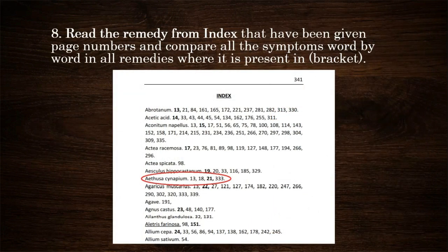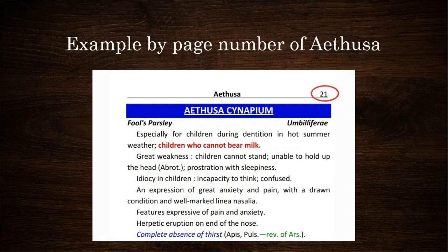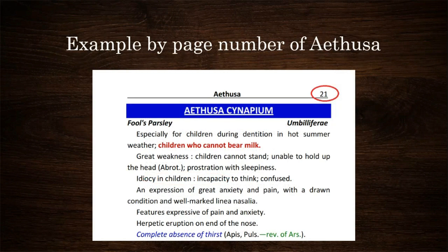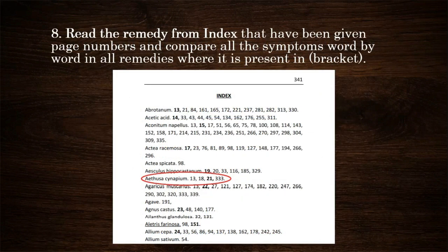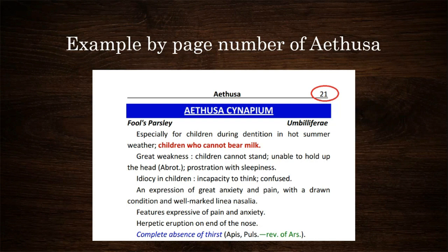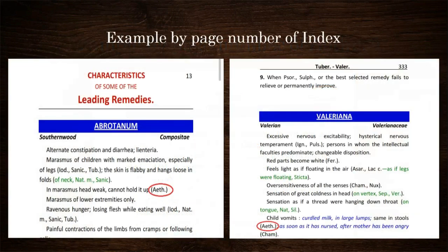Eight, read the remedy from the index that has been given page numbers, and compare all the symptoms word by word in all remedies where it is present in brackets. For example, Aethusa Cynapium with page numbers 13, 18, 21, 3, 33 in the index — the page number of Aethusa is 21, but all symptoms where it is present in brackets are also present in Aethusa.